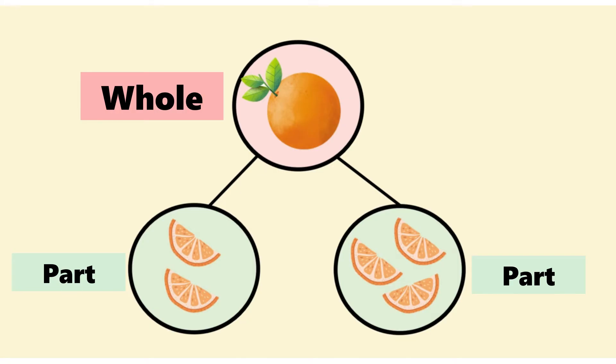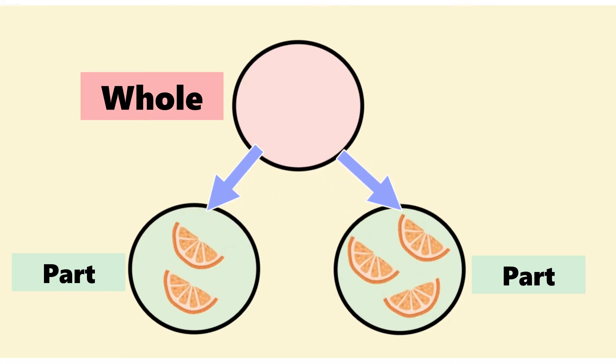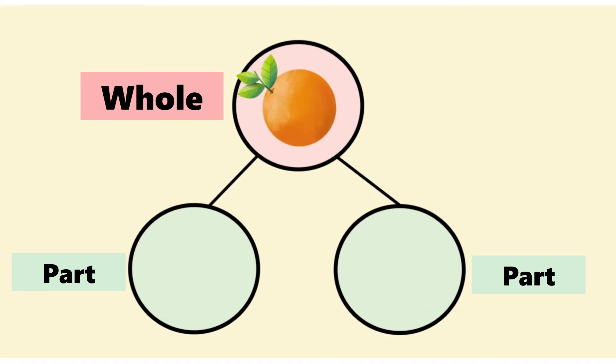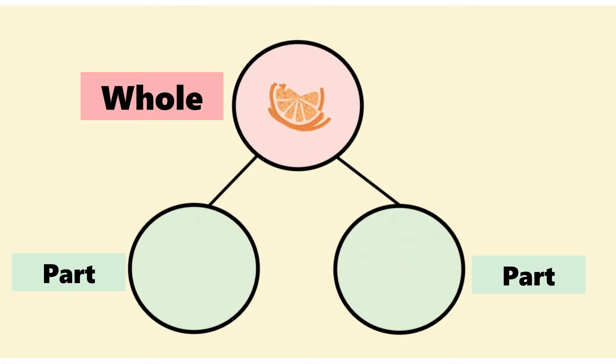Number bonds are important because they help us to see how the whole can be broken up into parts and how the parts can be put back together to make a whole. They help us see the part-part-whole relationship.